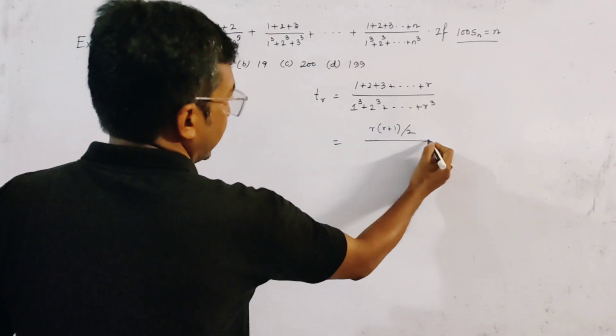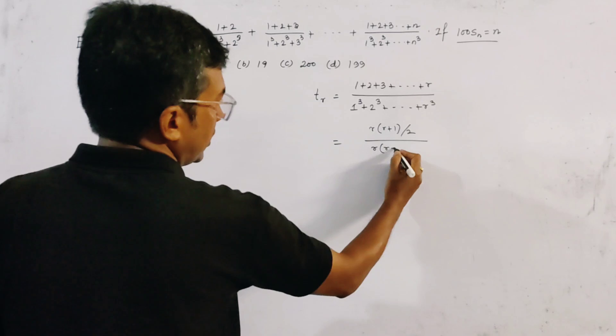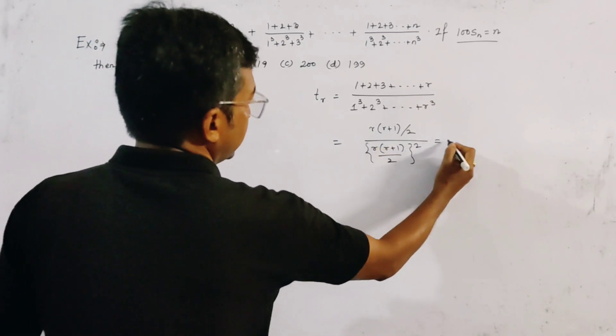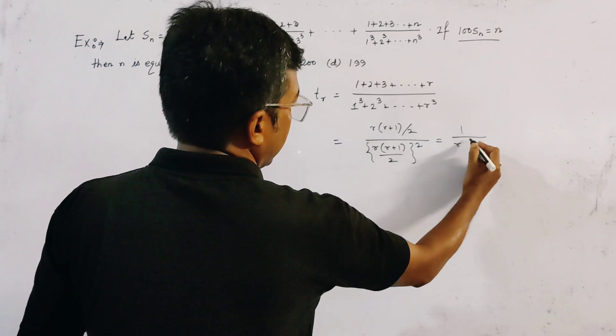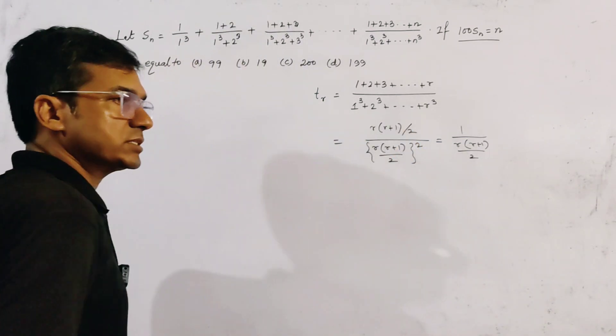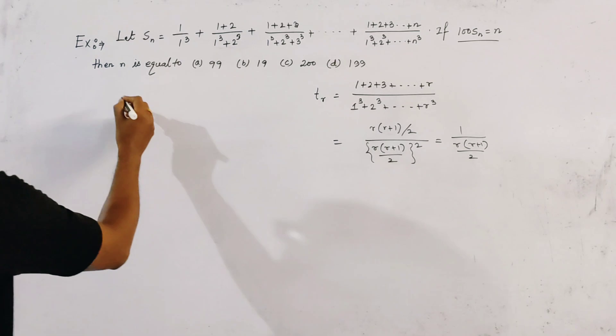This equals r(r+1)/2 divided by [r(r+1)q/2], which simplifies to 1/[r(r+1)q/2]. One term is cancelled out.